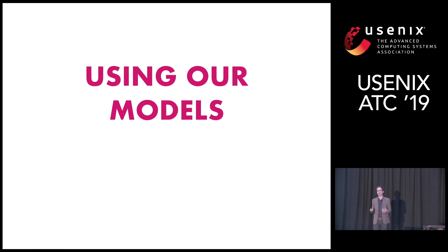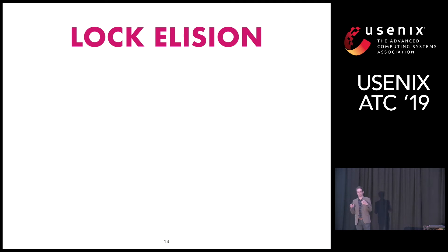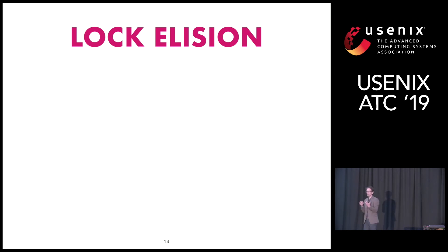That's how we validated our models. The final thing is how we used them. There are many uses for these formal models — validating compilers or programs that use transactions. What we wanted to do was validate a program transformation ARM was particularly interested in called lock elision — one of the key driving forces behind having transactional memory. The idea of lock elision is that you take a critical region protected by a lock, elide that lock, and replace it with having the critical section inside a transaction. The benefit is that two non-conflicting critical sections can then run in parallel rather than being serialised by locks.